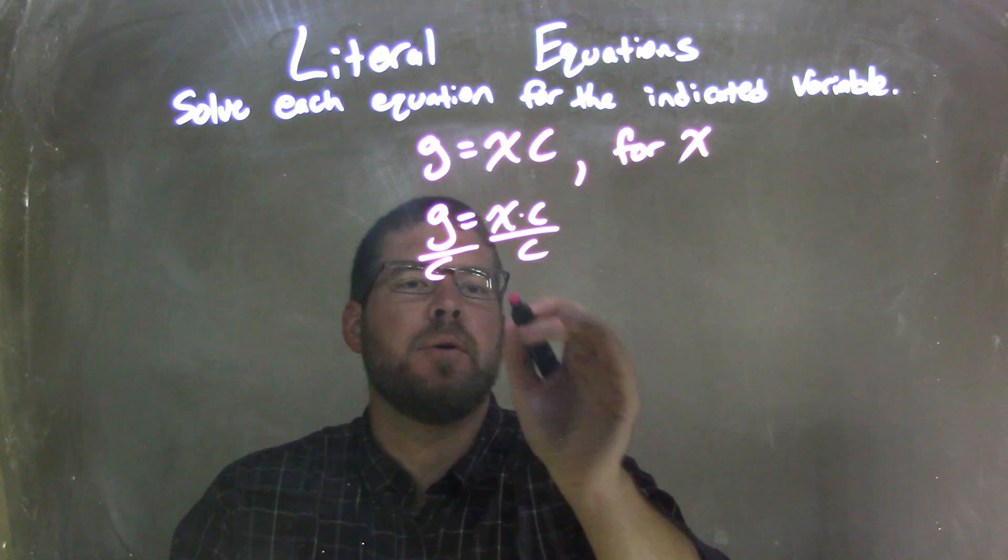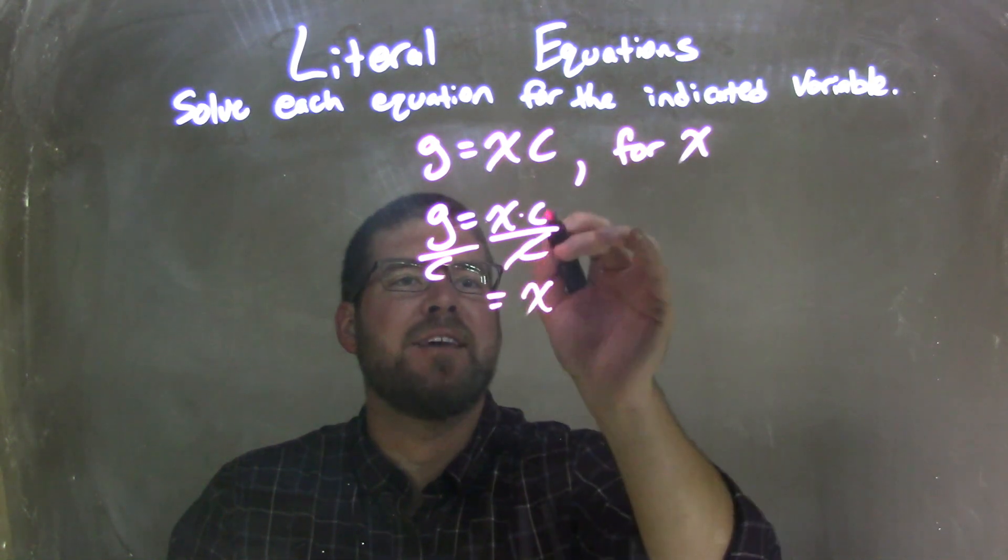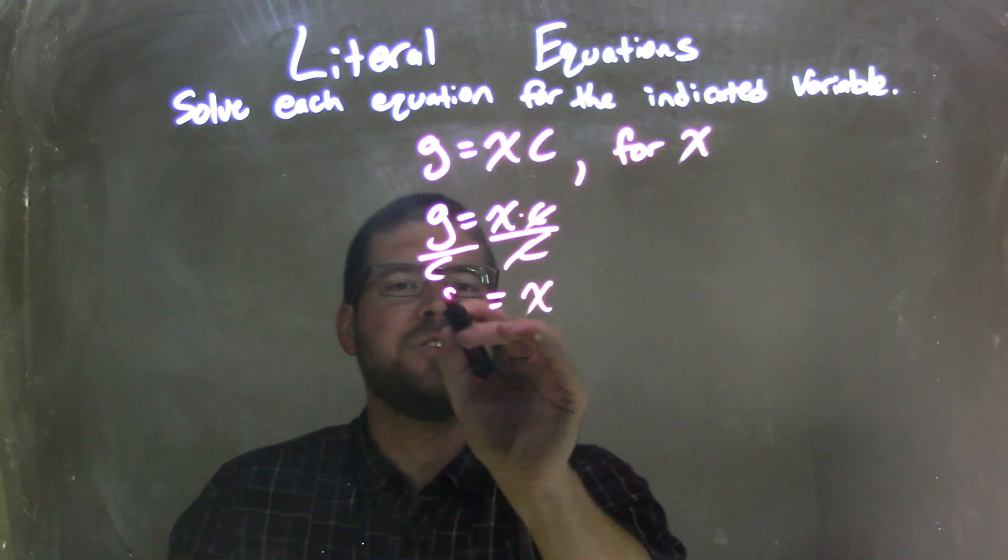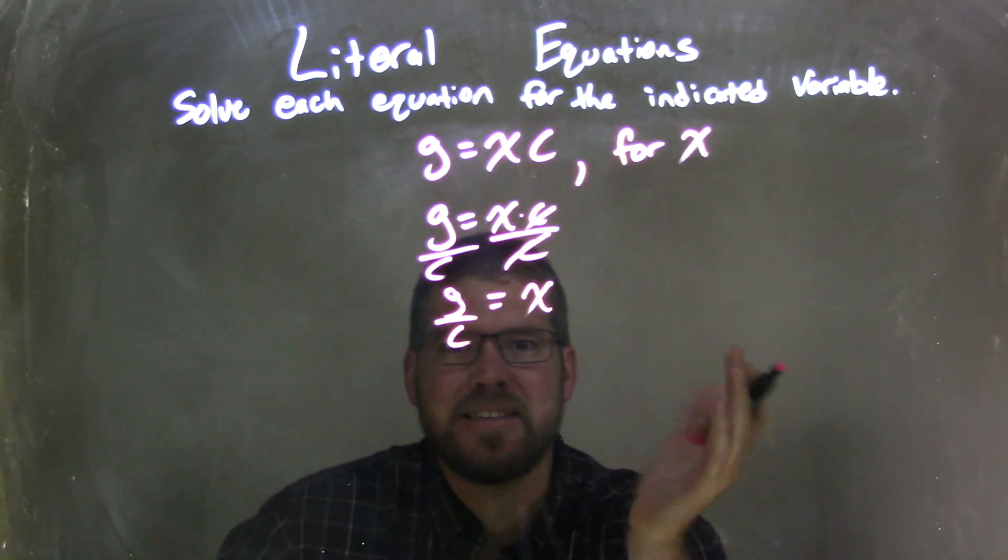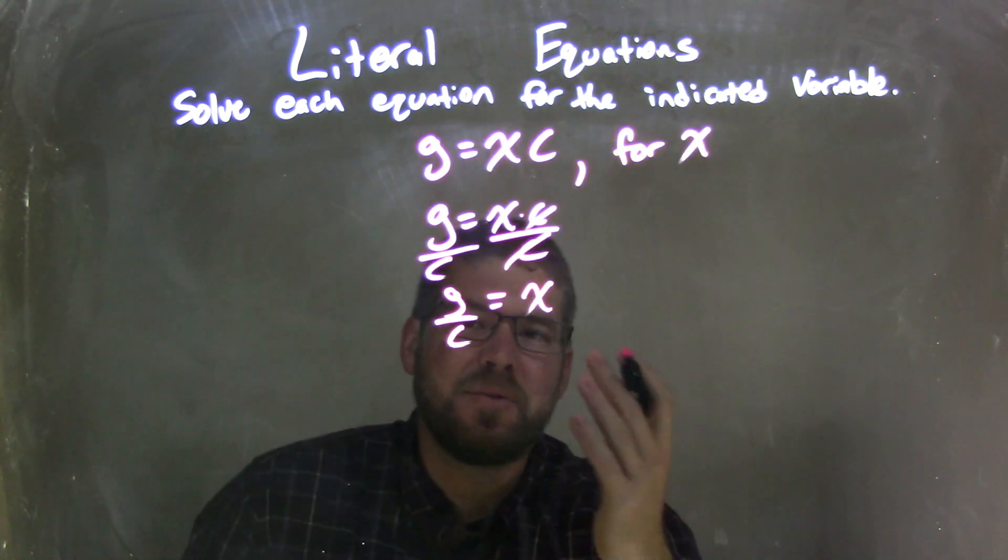So I'm going to divide by c on both sides, leaving x by itself on the right, and g over c on the left. Well, x is already isolated, fantastic, that's what we wanted, and it's equal to g over c.